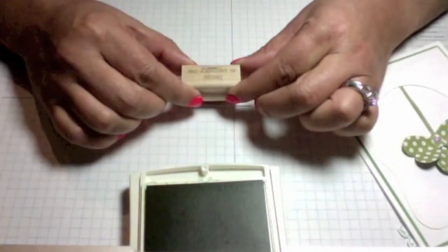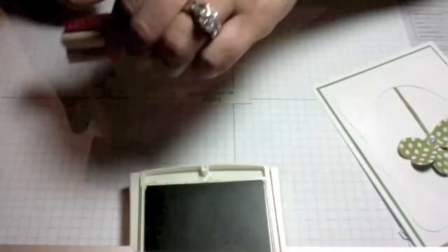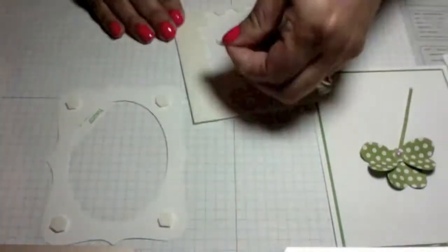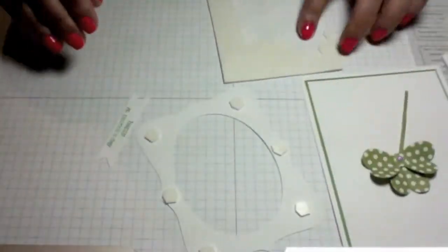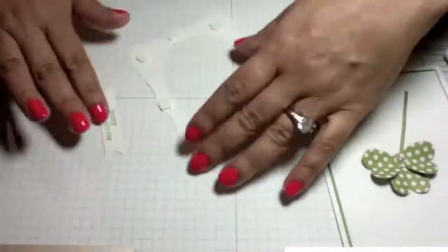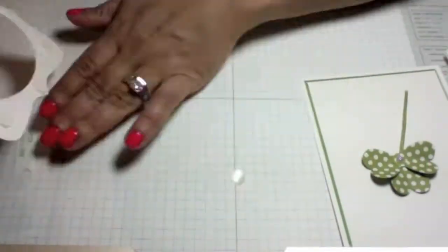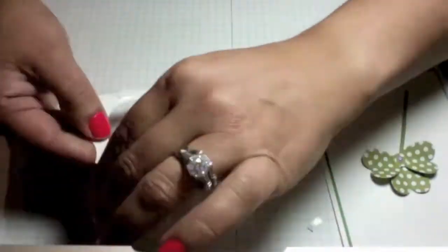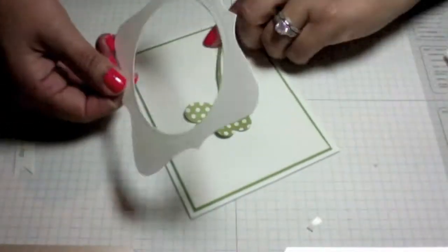Next we're going to add some dimensionals to the back of our frame here. I like to add a lot of dimensionals, I just don't like it to buckle, so make sure you add lots of dimensionals. I'm just going to place it like you see there.